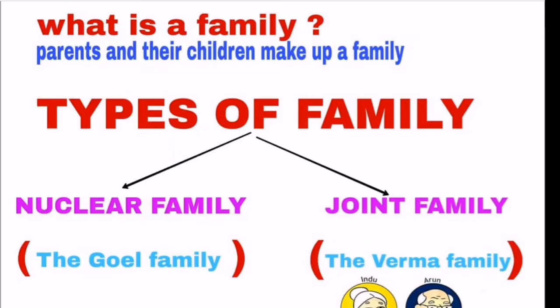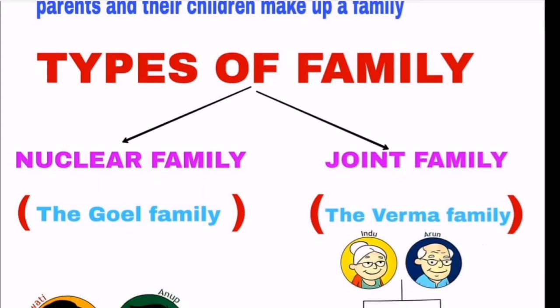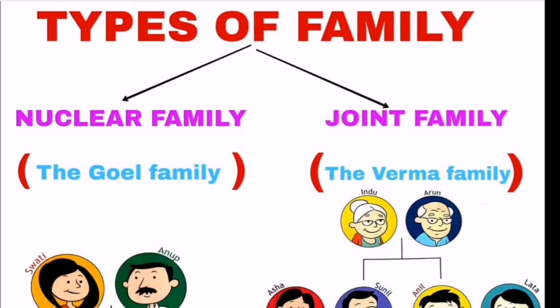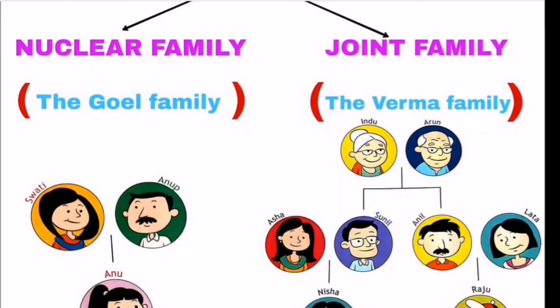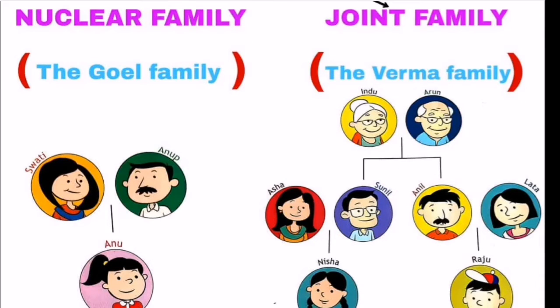Look at the picture on the screen. When parents and their children live together, they make up a family. There are different types of families: one is a nuclear family and another is a joint family. In the book we can see that the Goel family is a nuclear family — a small family — whereas the Barma's family is a joint family, which means it is a big family.